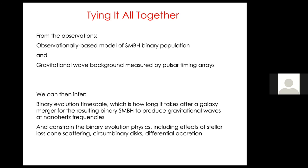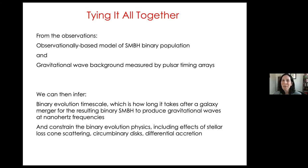Chiara Mingarelli followed up on J1010 and the Goulding et al. paper, clarifying that while it's true they estimated the gravitational wave background amplitude from just one source as the most pessimistic case, they then looked around J1010 and found 112 other candidates and also estimated an optimistic amplitude of the background from that. The key point is that we need to find more of these sources, but it's not that only one potential dual AGN was considered as a signpost for gravitational-wave-background-creating mergers.